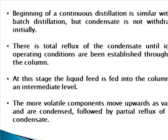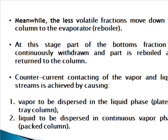Continuous distillation begins similarly to batch distillation, but condensate is not initially withdrawn. It runs with total reflux until ideal operating conditions are established throughout the column. The liquid feed is then fed into the column at an intermediate level. More volatile compounds move upward as vapor and are condensed with partial reflux; less volatile fractions move down to the evaporator. Part of the bottom's fraction is continuously withdrawn and part is re-boiled and returned to the column, achieving counter-current contacting of vapor and liquid streams.